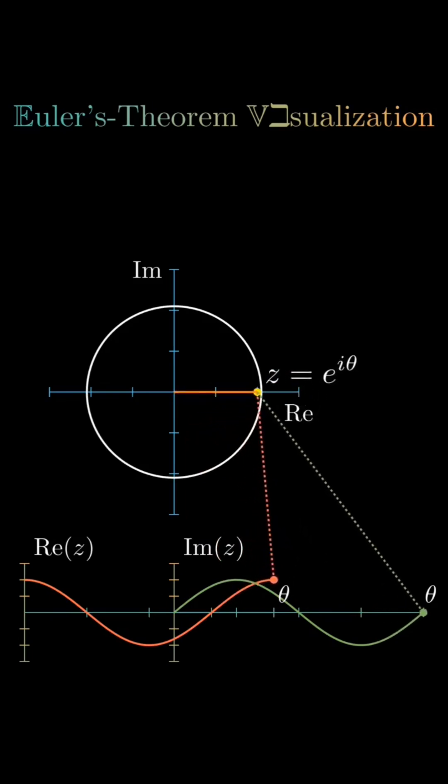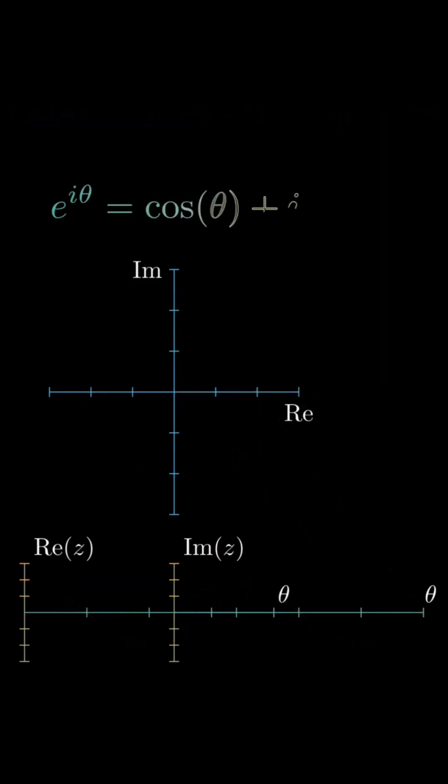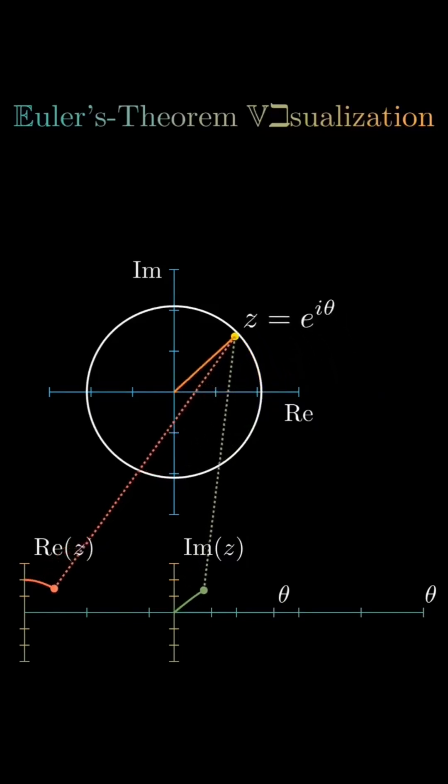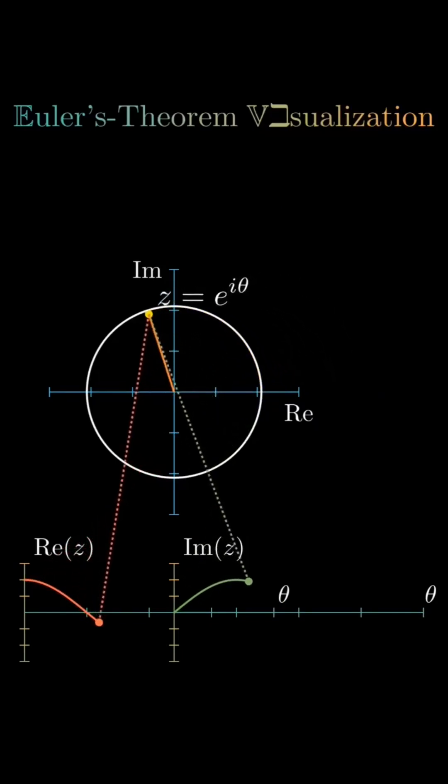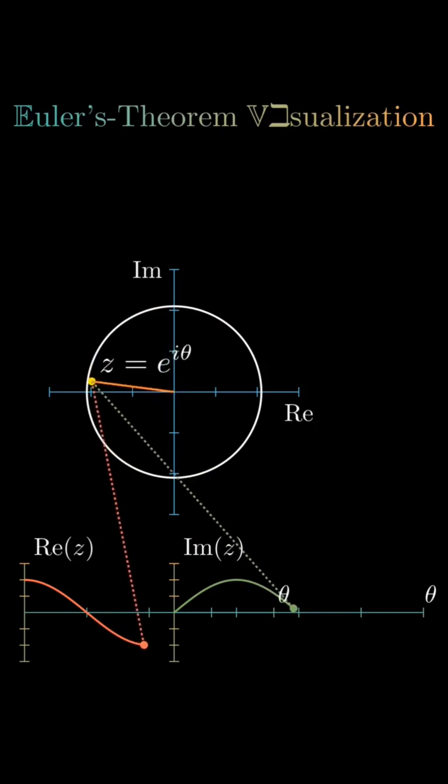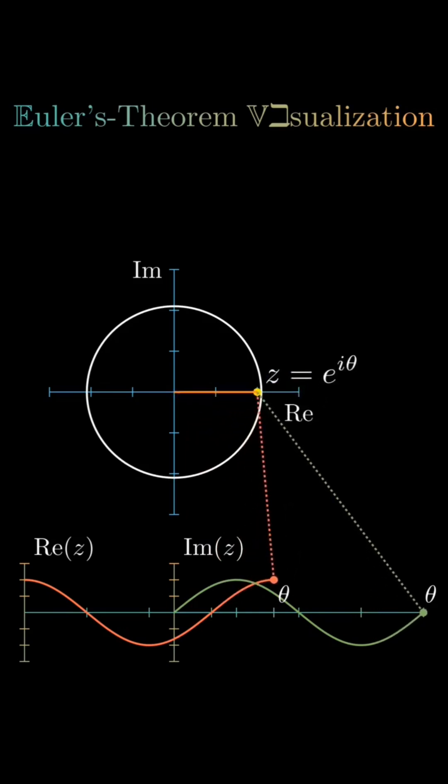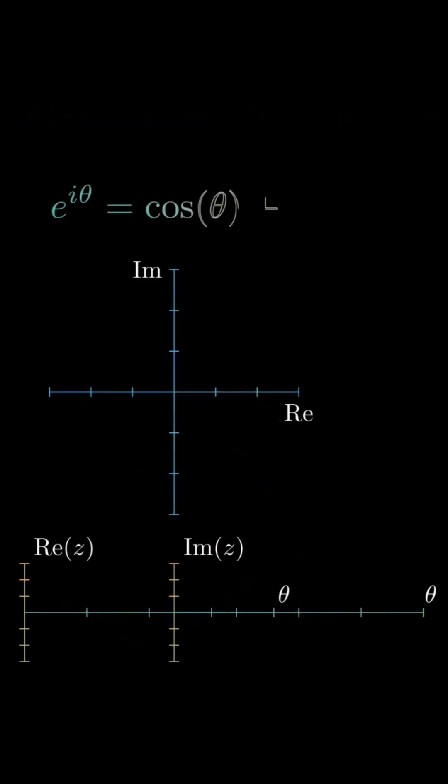It also shows a deep connection between trigonometry, exponentials, and imaginary numbers. So this is a super mesmerizing visualization of the legendary Euler's identity. But why is this important?